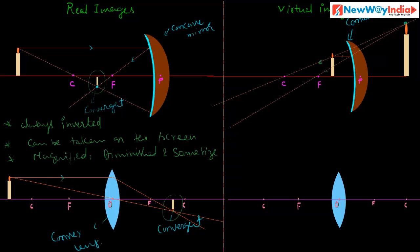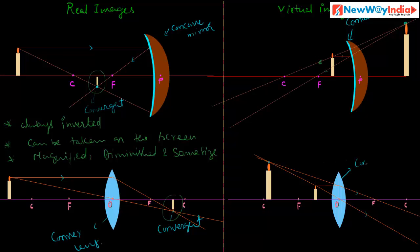In the case of a convex lens, if you place an object between the optical center and the principal focus, one ray travels parallel to the principal axis and after refraction passes through the principal focus. Another ray passes through the optical center. These two refracted rays do not meet at any point, but if you extend these lines backward, they meet at a point — meaning the refracted rays appear to diverge from this point. So here the virtual image is formed, in the case of a convex lens.